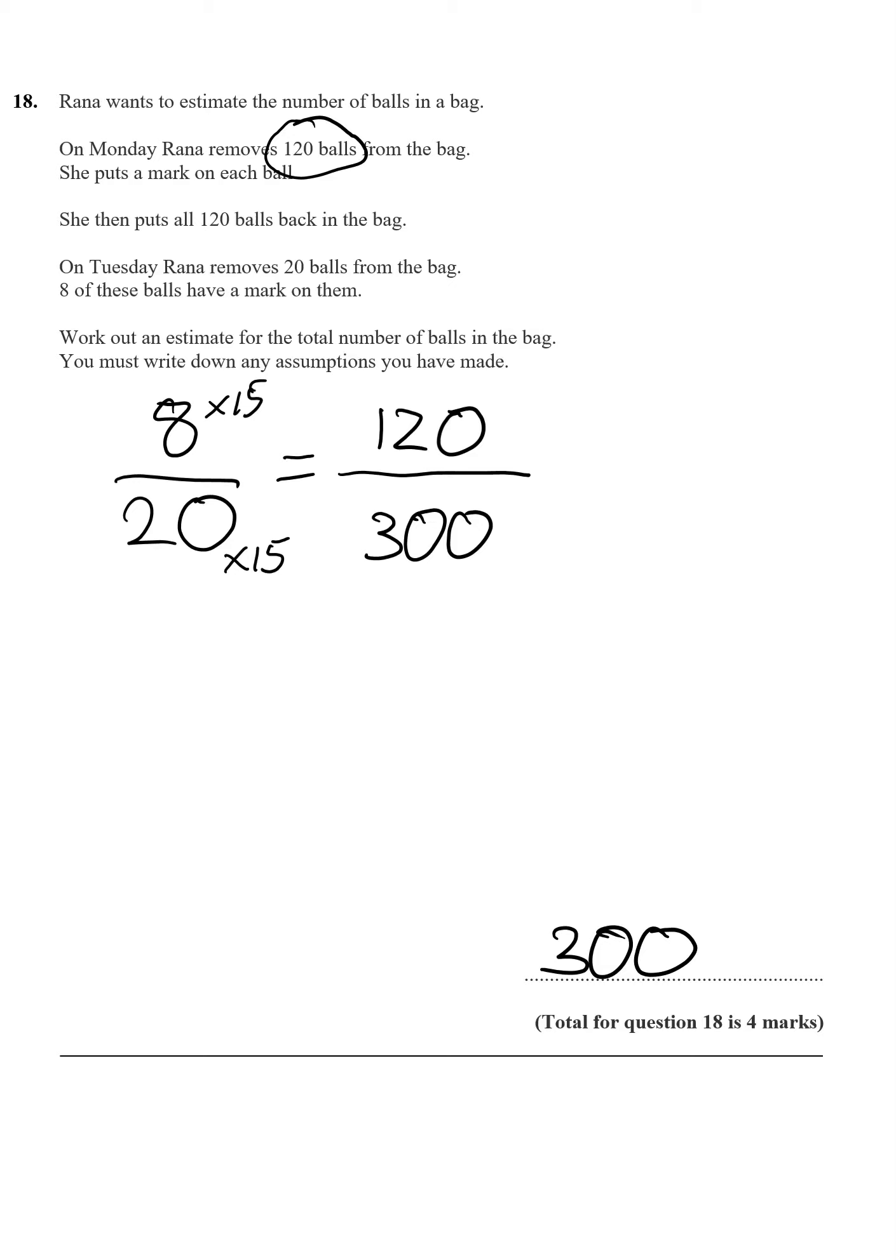Now, what assumptions have we made? Well, the sample is random. We've also assumed that we haven't lost any. And they're in the same proportion, which they would be if this was correct. So 4 marks, quite nice for 4 marks. Right, onto the next question.